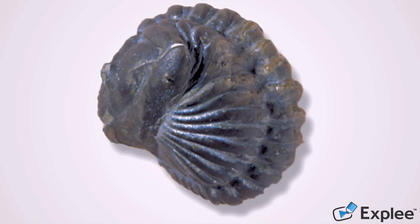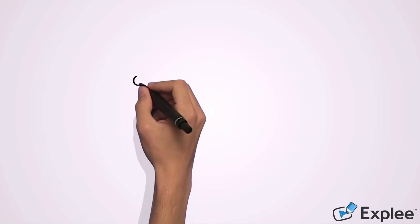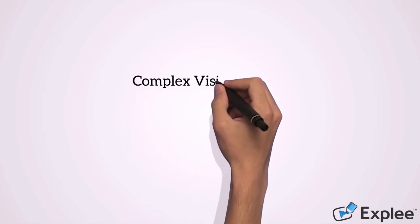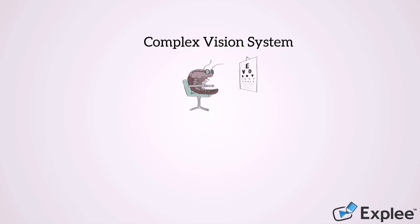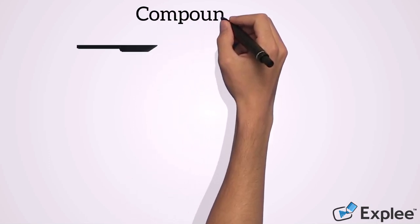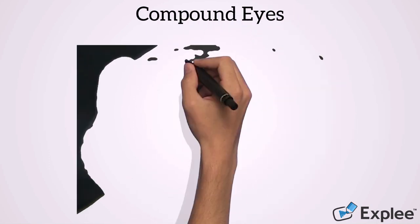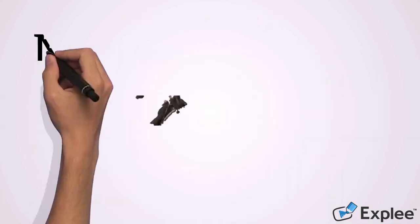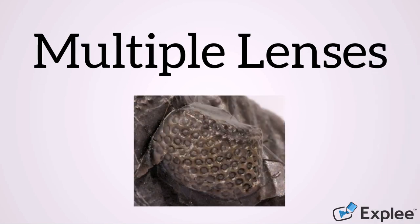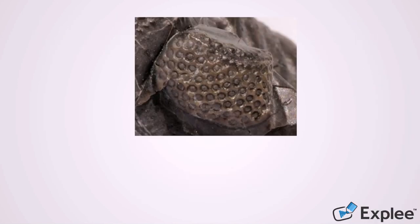One of the most interesting aspects about trilobites is their eyes. In fact, trilobites were the first to develop a sophisticated visual system out of all species, which happens to be the oldest preserved eye design. Their eyes are composed of compound eyes, which are characteristic for arthropods. Compound eyes are composed of repeating units of lenses, and each lens acts as a separate visual receptor.